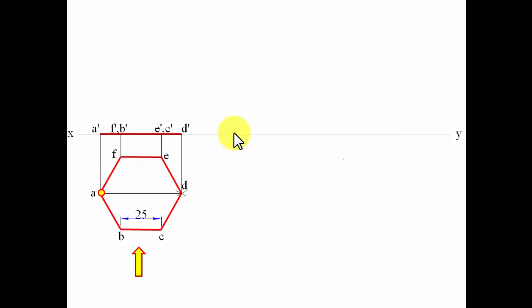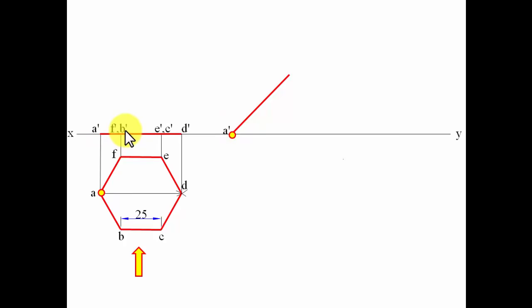If this diagonal makes a 45-degree angle with the HP, then indirectly the surface is also making 45 degrees. So I'll recreate the entire front view at an angle of 45 degrees. Let me recreate point A' and draw this same line at 45 degrees. Take A'B' as radius with A' as center to cut an arc, then take B'E' as radius with B' as center to cut another arc — getting points E', C', and similarly D'.